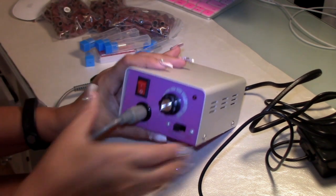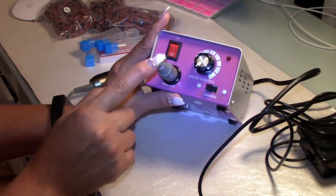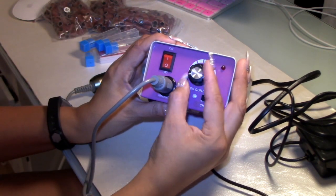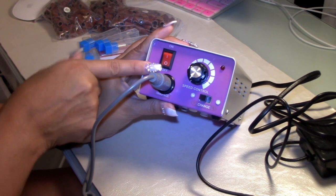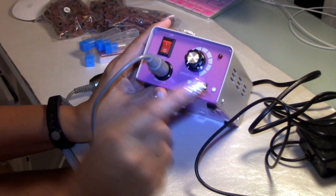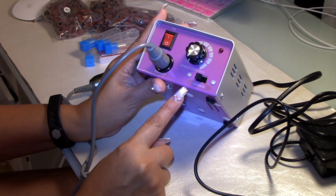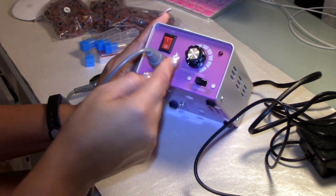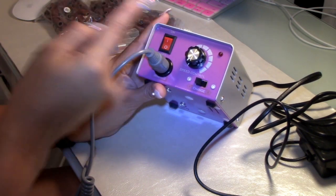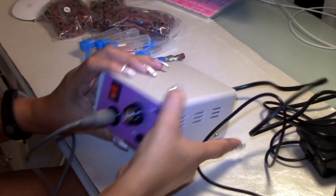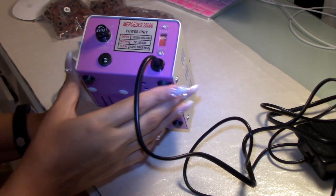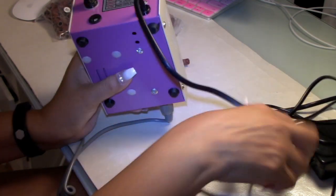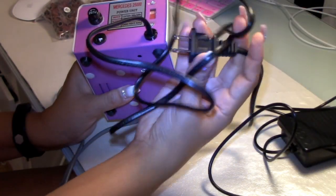So here you have where it says hand piece. That's where you'll put it in and you have your speed here and on and off. And also you have here if you want to go forward or reverse. On the back, you will have a fuse and obviously you have your plug to plug it into the wall.